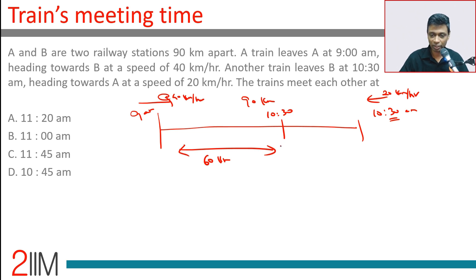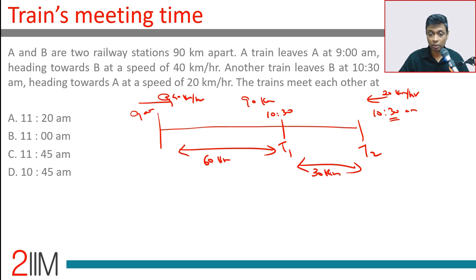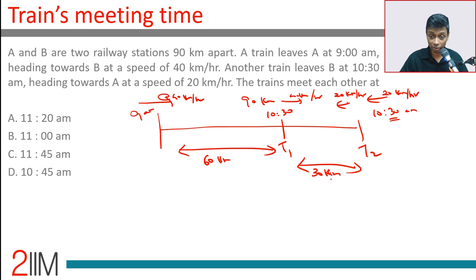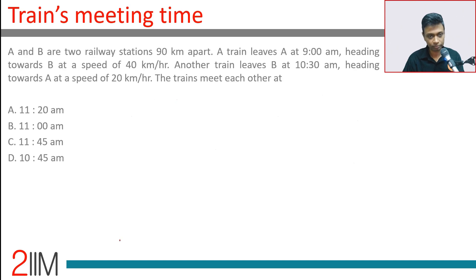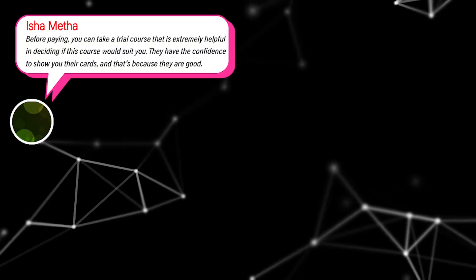At 10:30 the two trains are 30 kilometers apart — 90 minus 60. Train 1 is traveling at 40 km/h and Train 2 is traveling at 20 km/h, so the relative speed is 60 kilometers per hour. They will meet after 30 divided by 60 — half an hour. Half an hour after 10:30 is 11 a.m.